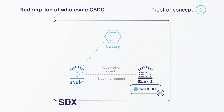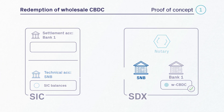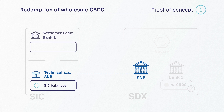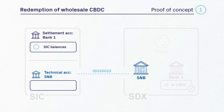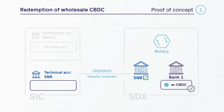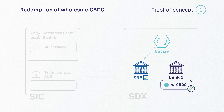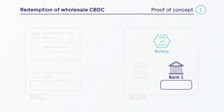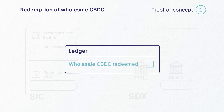If the state change does not concern a spent state, the notary node signs the request, confirming that the wholesale CBDC is now blocked. The SNB node then instructs SIC to transfer SIC balances from the SNB technical account to bank one. The communication between the SDX platform and SIC works via ISO 20022 messaging standard. The successful cash transfer in SIC triggers a message to the SNB node that the payment has been successfully processed, which in turn requests the notary node to sign the redemption of wholesale CBDC. Upon the successful signing by the notary node, the ledger is updated that the wholesale CBDC has been redeemed.